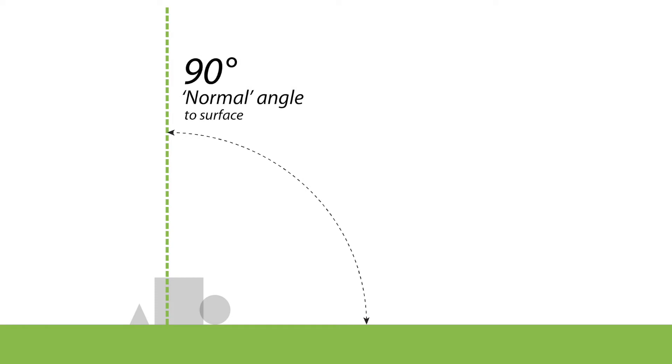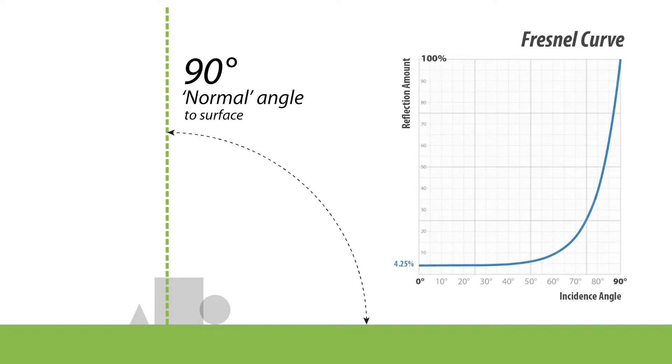The first thing we need to talk about is the concept of a normal. In all 3D applications, this concept is used all over the place. For reflection purposes, on any given surface represented by this green bar, there is a line you can draw that's perpendicular to that surface — a 90-degree angle. That is called a normal angle, sometimes referred to as normal to the surface. The way reflections work relative to your view of that surface is described by a very well understood curve called the Fresnel curve.